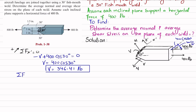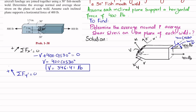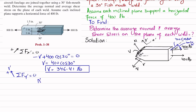Now for N, we use the equation of equilibrium: the sum of all forces along the y-dash direction must equal zero, with the y-dash direction taken as positive. The forces in the y-dash direction are N and −400·sin(30°), so: N − 400·sin(30°) = 0, giving N = 400·sin(30°) = 200 pounds.